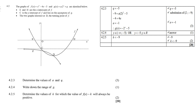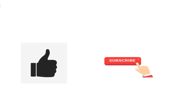For 4.2.5, determine the values of k for which f(x) − k will always be positive. The answer is k < −9. This is Ahmed Suleiman with Mathematics with Amps. I hope you liked this video — please don't forget to give me a huge like and subscribe. Remember, subscription is free.